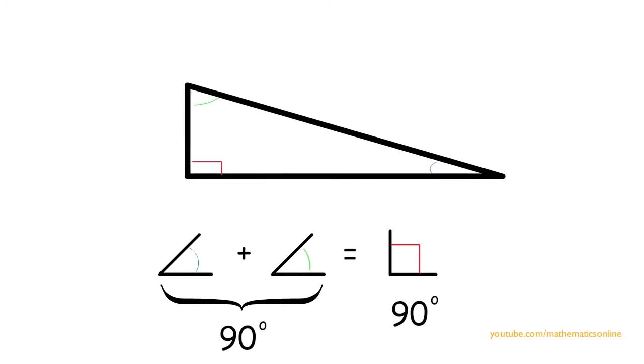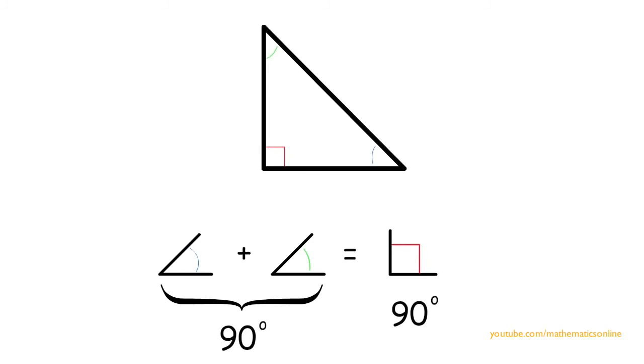Therefore in every right triangle the sum of the two smaller angles is always equal to the right angle.